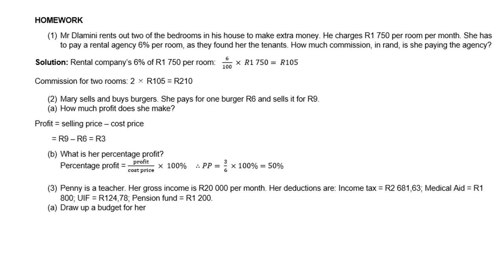Let's look at the solution of the first one. Mr. Tlamini rents out two bedrooms. The rental company takes 6% of 1,750, which is 105 rand. Commission for the two rooms is two times 105, which is 210 rand.